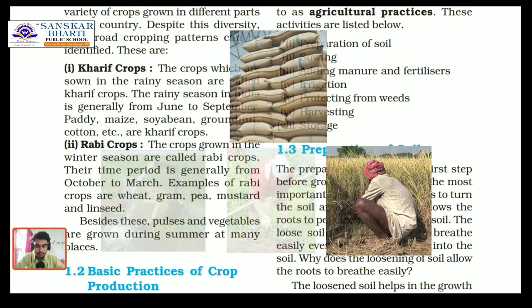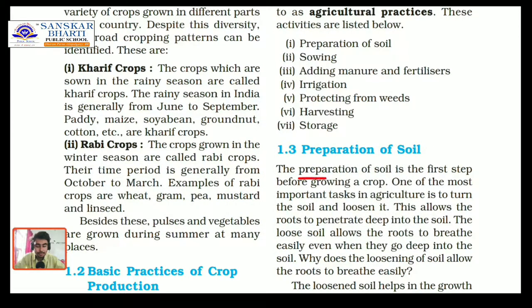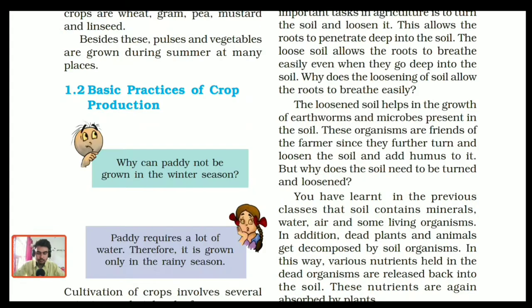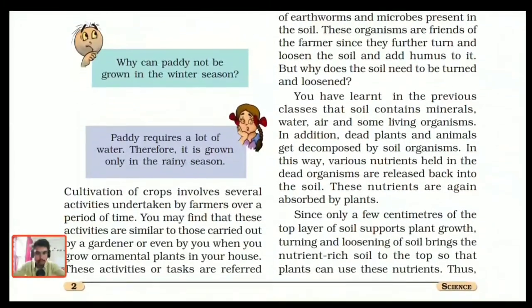Moving on to the first topic: preparation of soil. It is the first and most important step before growing a crop. We need to turn and loosen the soil. Loose soil allows roots of new plants to penetrate deep, traps air to help roots breathe, allows water to percolate inside, and allows useful microbes like nitrogen-fixing bacteria and earthworms to inhabit. Turning the soil also brings the nutrient-rich layer to the top. This whole process is known as tilling or plowing.